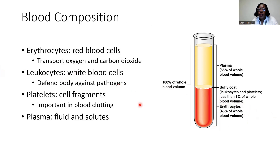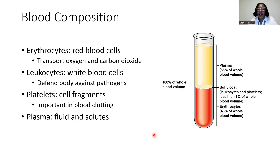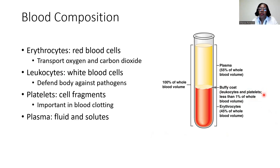Then we've got the leukocytes. Leukocytes are going to be our white blood cells. The function of leukocytes is really that defense role — it's going to be a part of the immune system. These are the cells that help to fight infections, whether it be viral, fungal, or bacterial. These cells help to defend our body against foreign pathogens. Leukocytes make up, together with platelets, less than 1% of our total blood volume, unless you're actively fighting an infection, where you can see these leukocyte numbers rise higher.